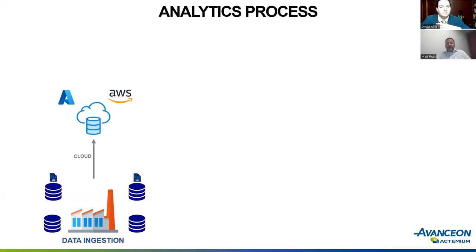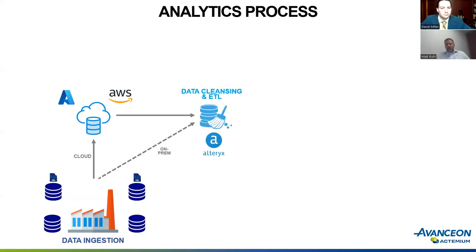The first thing we look to do in a factory is figure out how to get the data somewhere that we can use it without interfering with production — a little bit offline and not directly connected to the process, so we don't impact the performance of those data sources. In many cases we pull it into the cloud — Azure, AWS, or some cloud service — or on-premises, with the goal being to get all that information moved over so we can cleanse it. We use a tool called Alteryx to clean up the data.